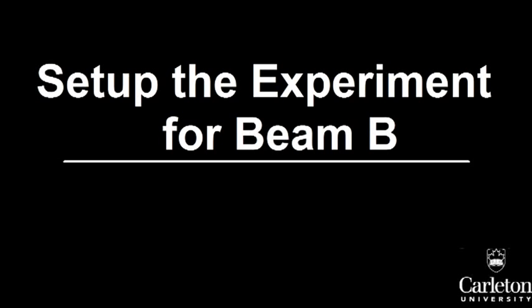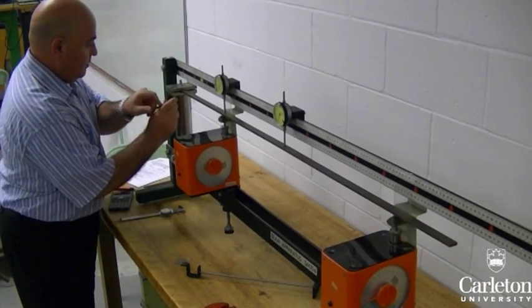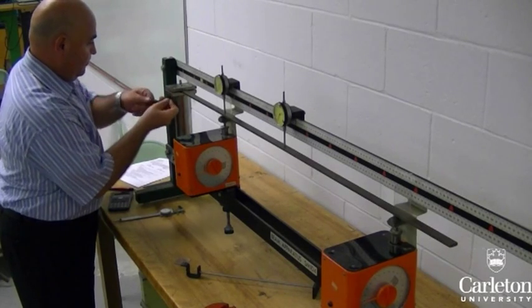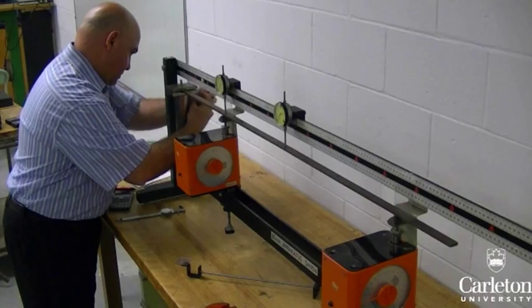Now we will test the same beam under different support conditions. This time the beam will be pinned at one end and fixed at the other. Securely attach the beam to the brace at one end. This acts as a fixed end, meaning that the beam is not free to rotate.